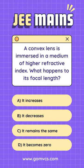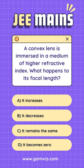A convex lens is immersed in a medium of higher refractive index. What happens to its focal length? A. It increases. B. It decreases. C. It remains the same. D. It becomes zero.